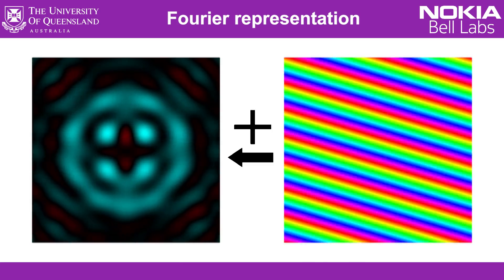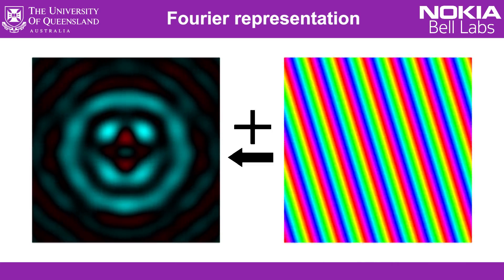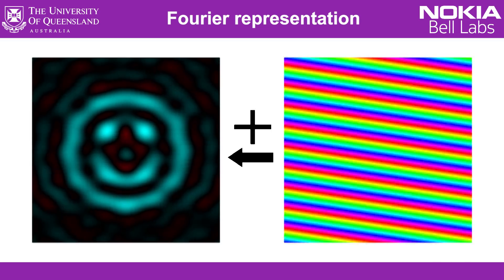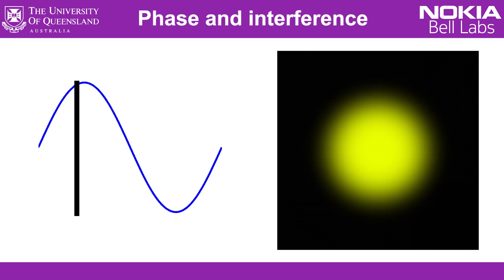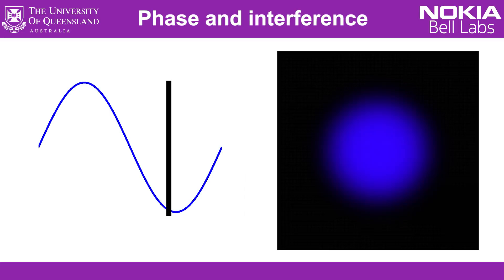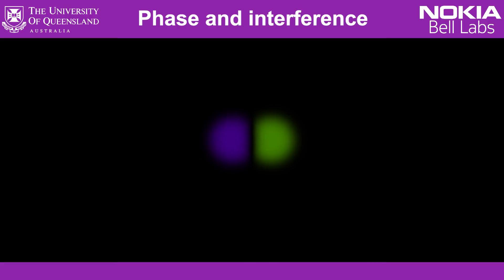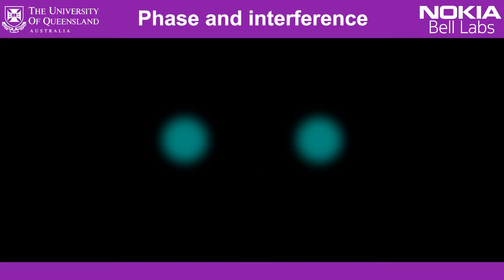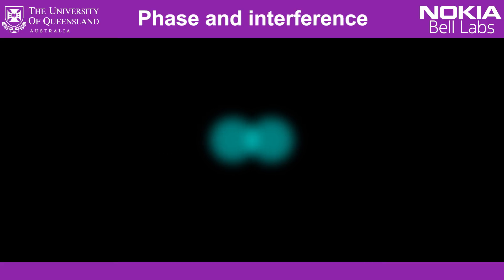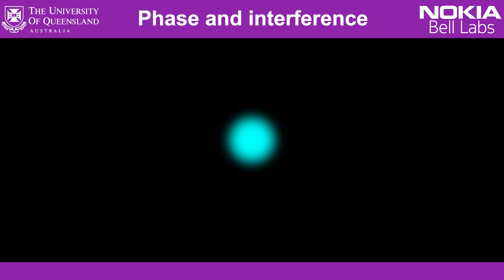Now the colours here don't represent the colours you'd see with your eye — in this case you'd just see one colour everywhere. They represent what's called the phase of the beam: what point in the cycle of the oscillating light wave it's at. Blue means it's in the middle of the cycle, and red means it's at the end of one cycle and the start of the next. So if the colours are mismatched, two points will get dimmer when added together, and if the colours are matched, it gets brighter. It defines how they interfere with each other.